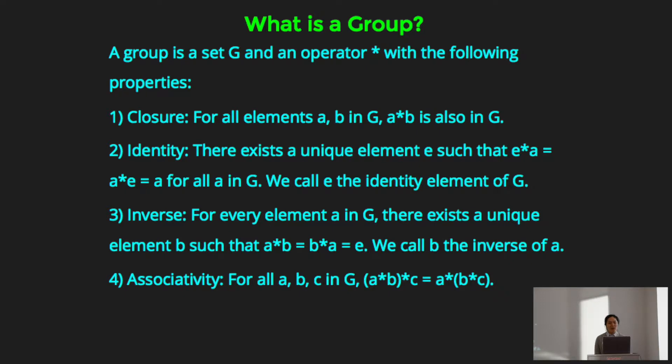And so there are four group axioms. Closure. That means that for all elements a and b in G, a star b is also in G. So it means that the group is self-contained. Second axiom, identity. There exists a unique element e, such that e star a equals a star e for all a in G. So if you're thinking about addition, the identity is zero. For multiplication, the identity is one.